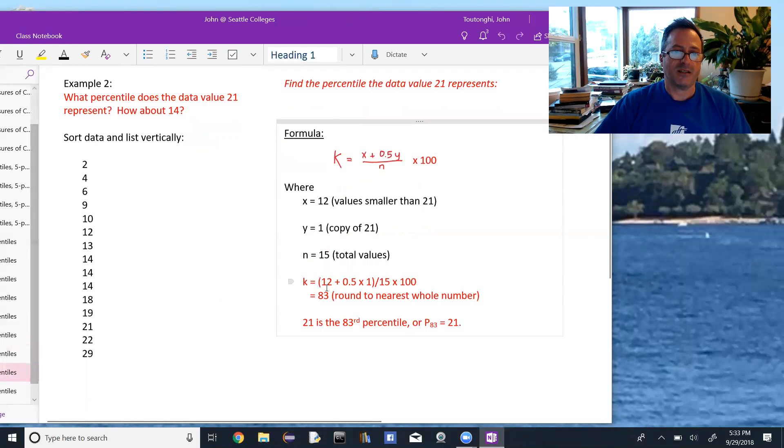So K is, using this formula, 12 plus 0.5 times 1, add them up, that's 12.5 divided by 15, and then multiply that total by 100. That's going to be 83.33333, but I'm going to round it to the nearest whole number. And so that data value of 21 is the 83rd percentile, or P83 equals 21.